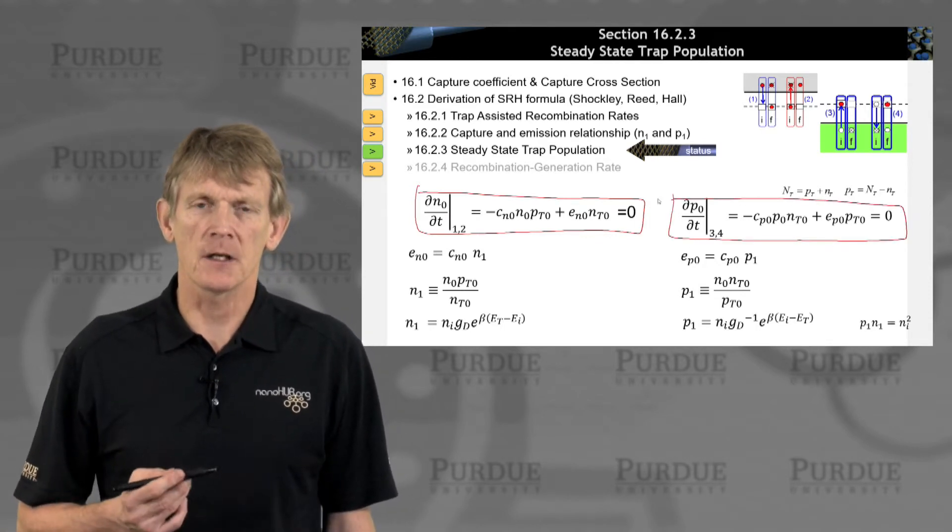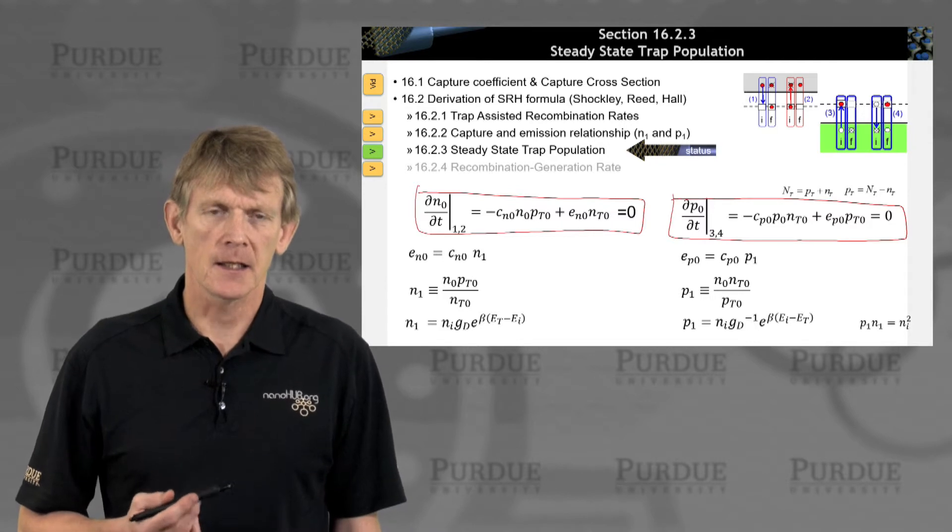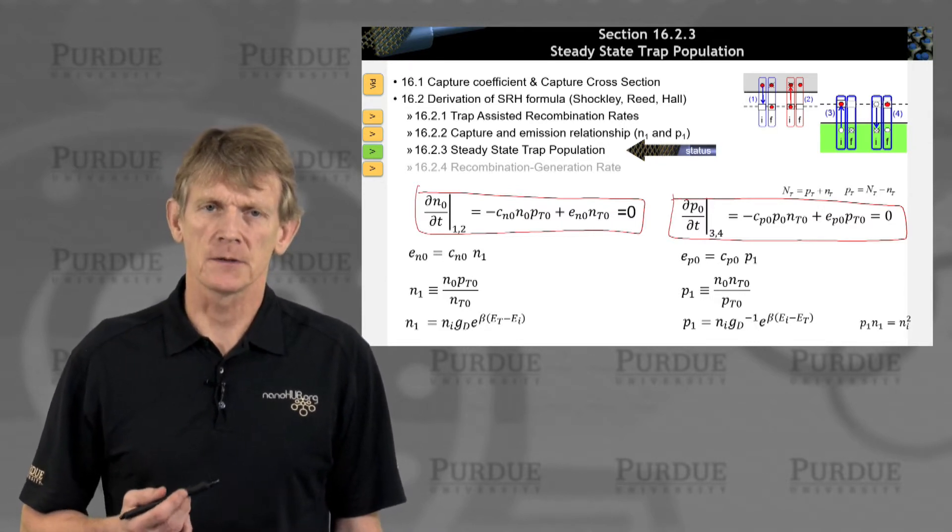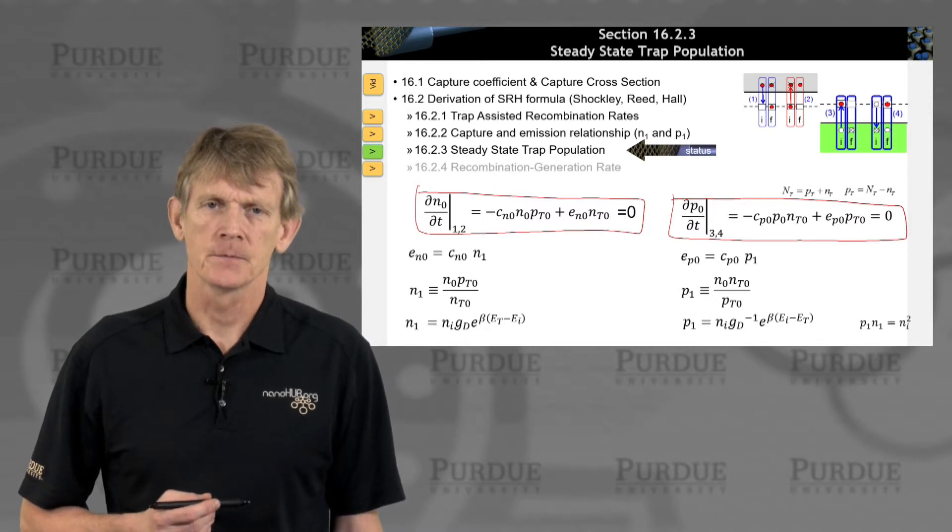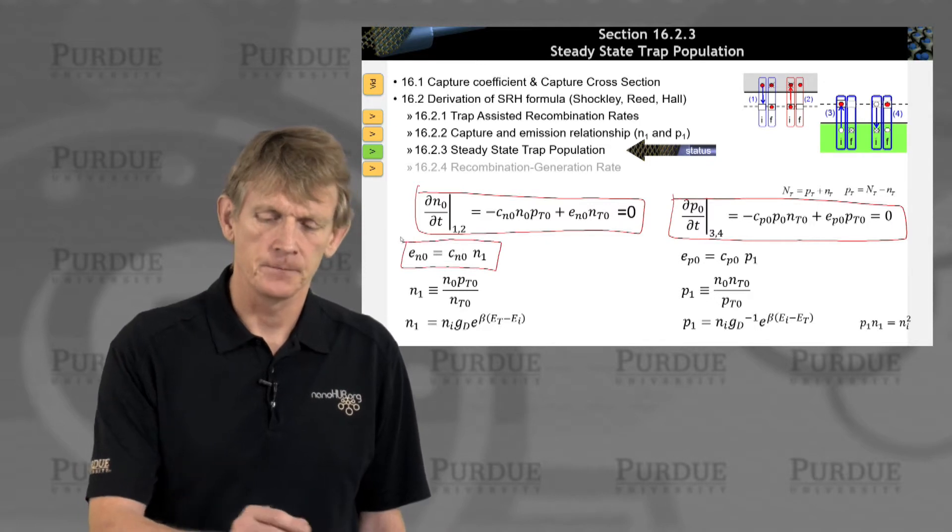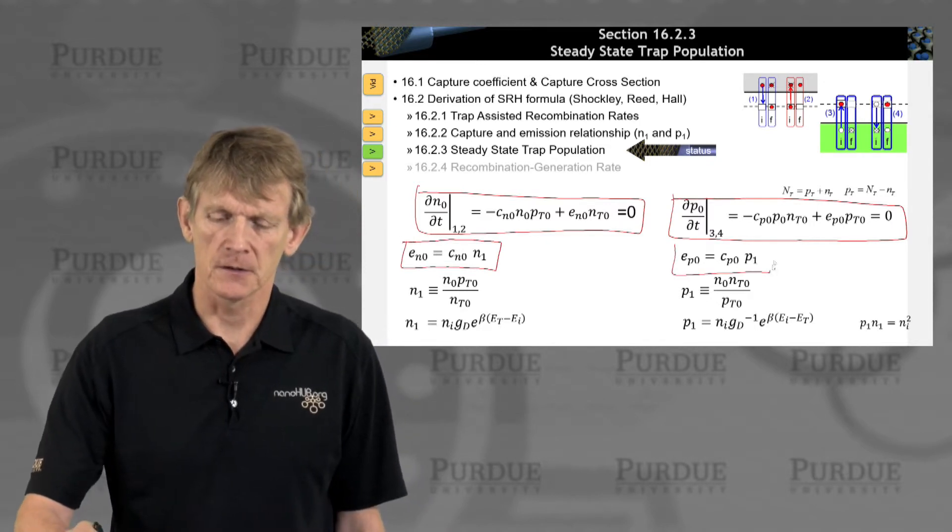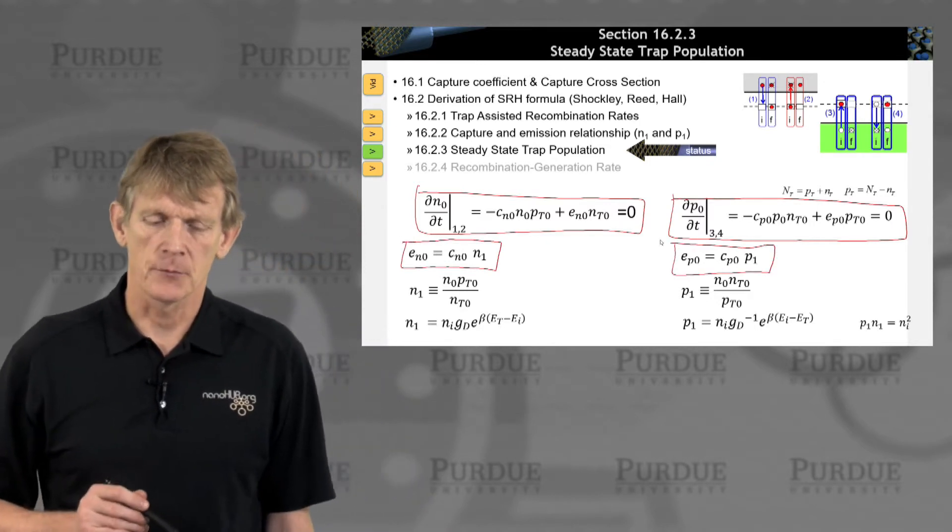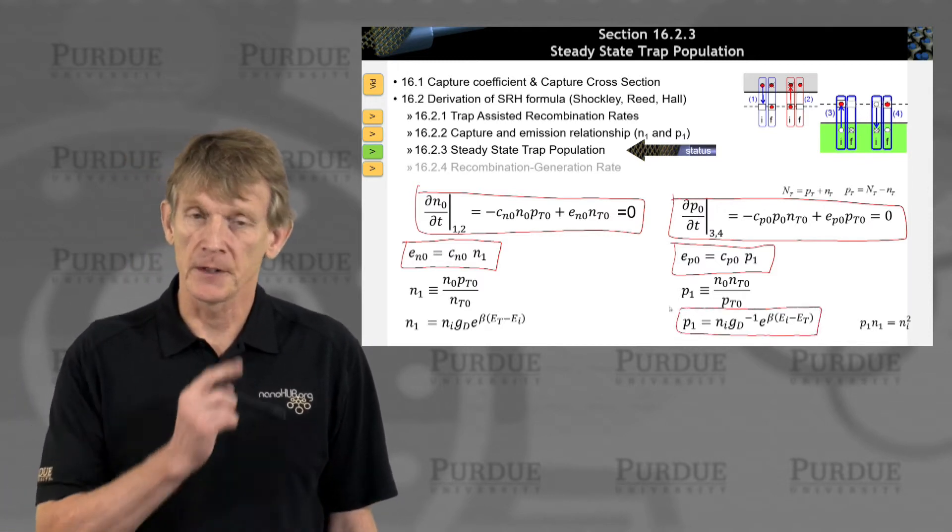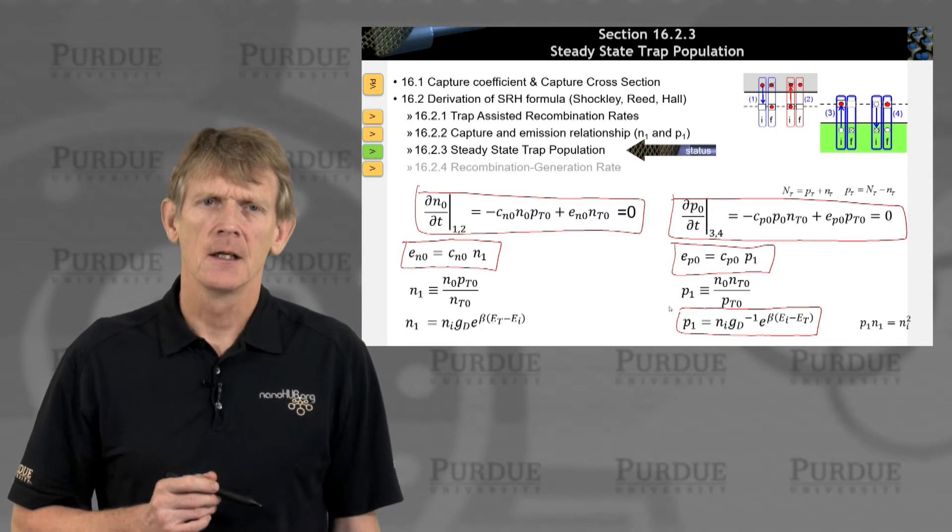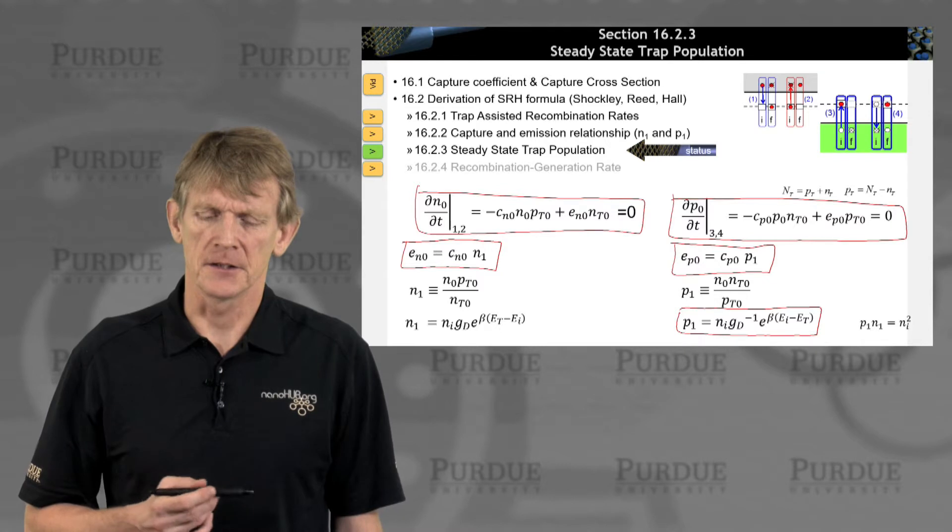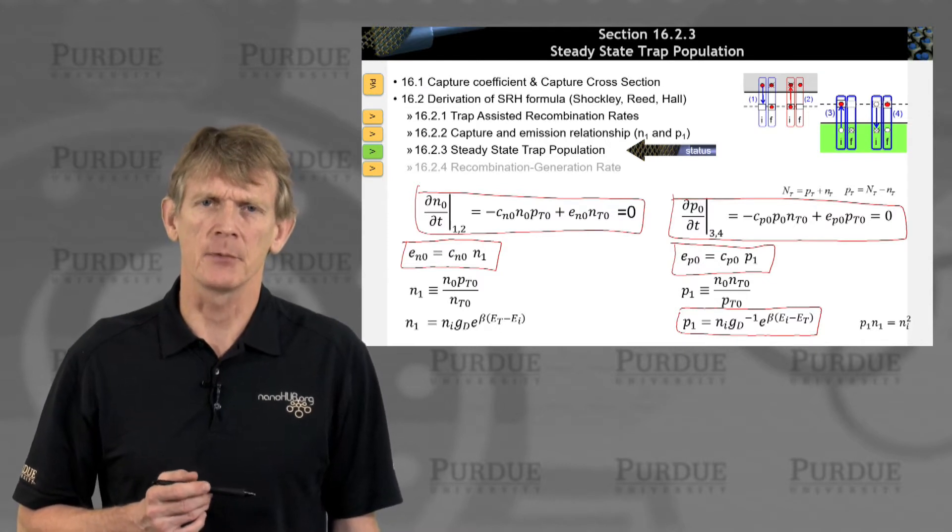This was dealing with the occupation in equilibrium for the electrons and holes in their respective bands. In the last section, we related the emission to the capture for electrons and for holes, and we had some gnarly expressions that involve some exponentials with the intrinsic energy level mid-gap ballpark and the degeneracy of the traps and the trap levels.